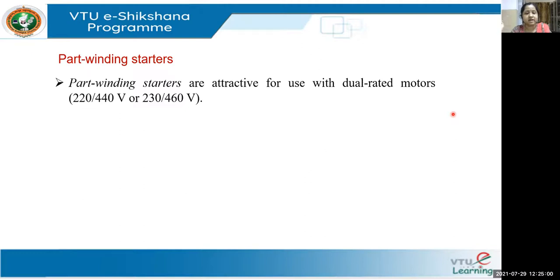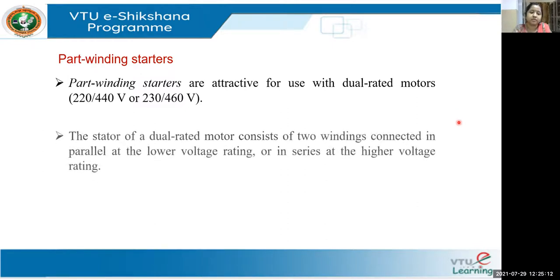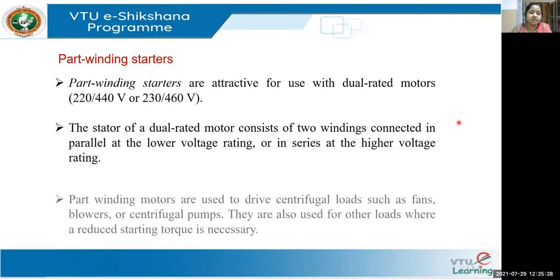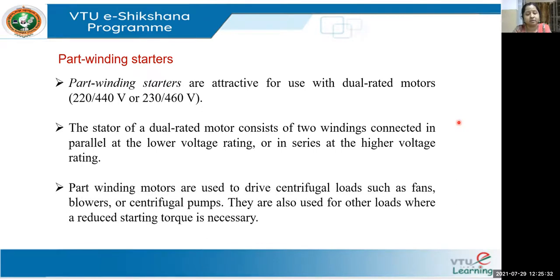Part winding starters are attractive for use with dual rated motors — motors that can run at 230V as well as 460V. The stator of the dual rated motor has two windings that can be connected in parallel for lower voltage or in series for higher voltage. Part winding motors are used to drive centrifugal loads such as fans, blowers, and pumps, and are also used in air conditioning systems.